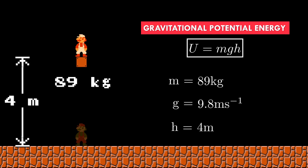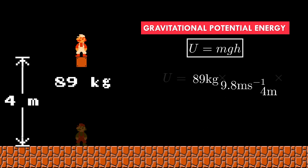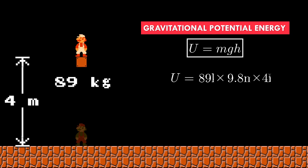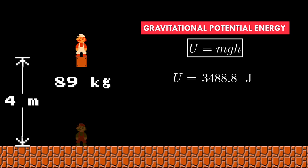So if Mario reaches that platform, he will have a gravitational potential energy of 89 kilograms times 9.8 meters per second squared times 4 meters. Since we are using standard units, we can just use joules — the standard unit for energy and work. After multiplying everything, we get 3488.8 joules.